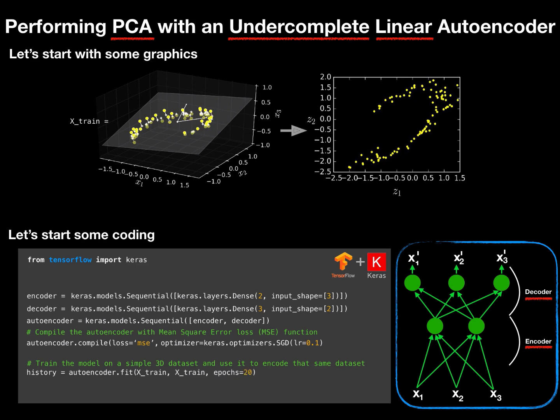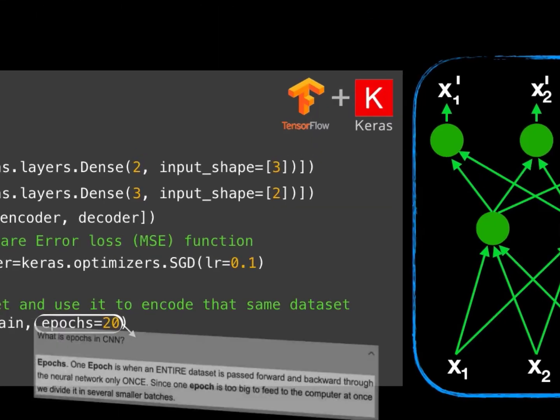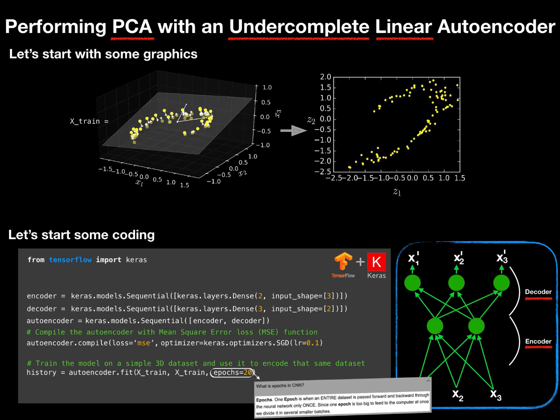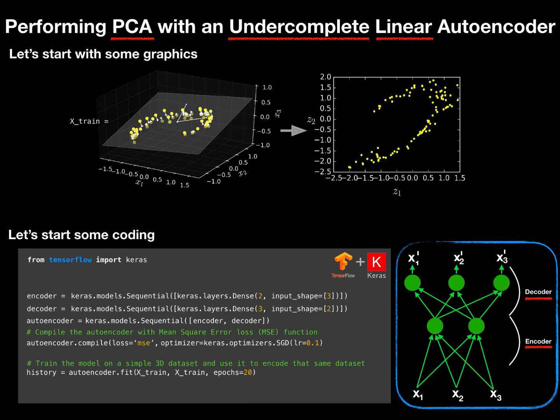Wait, what is an epoch? One epoch is when an entire dataset is passed forward and backward through the neural network only once. Since one epoch is too big to feed, we divide it into several smaller batches. Almost finished. Now we have the trained model, the trained neural network, which is our trained autoencoder, which can make reconstruction with the given data. Let's finally do it, and this is our predictions.